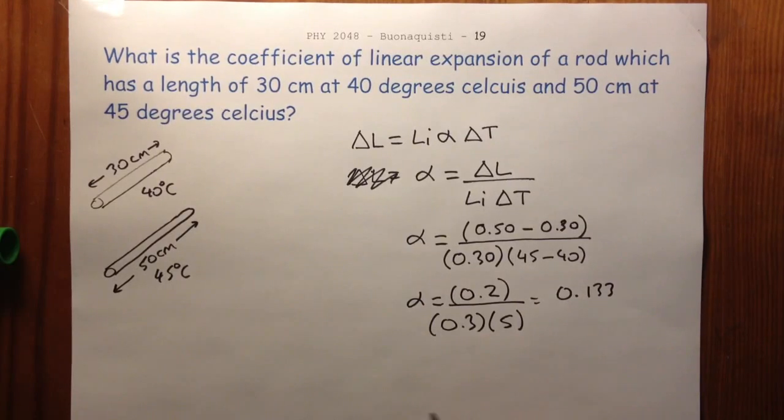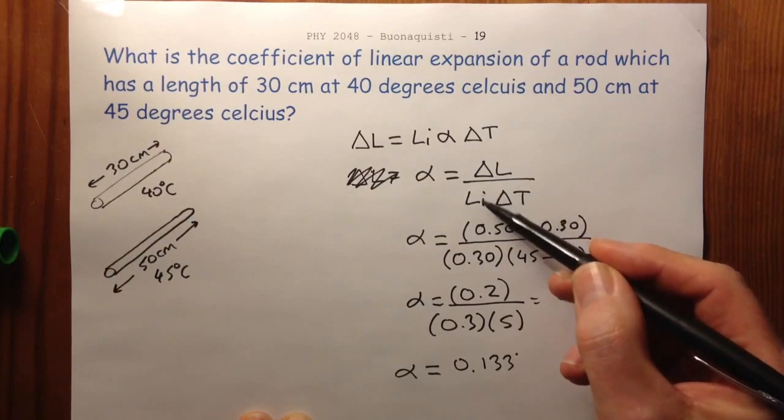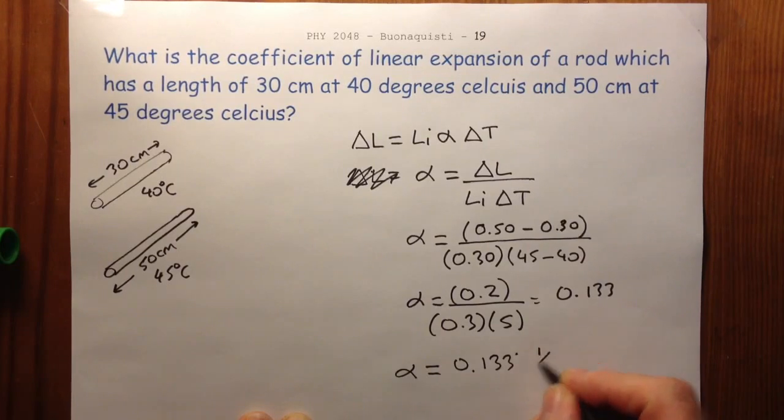So the coefficient of linear expansion is 0.133 recurring. And if we look at this, we see that we have a length divided by a length, so the units are 1 over degrees C in this case.